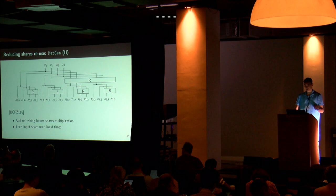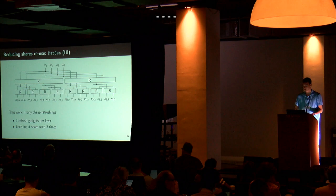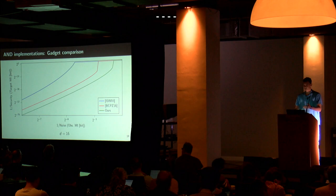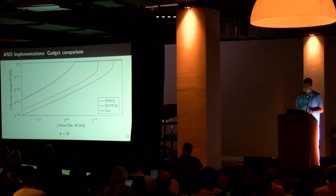We realized that if we look at this tree representation, we can do better: add a second refresh on each layer of the tree. Then each input share and each intermediate variable is used only a constant number of times, which should yield an even better security level. Indeed, looking at the evaluation output, going from the blue of ISW to the red of one refresh per layer to the green of two refreshes per layer shows quite a significant improvement.